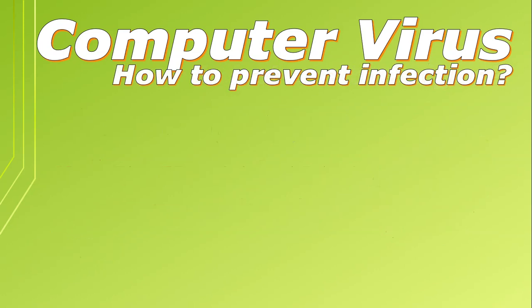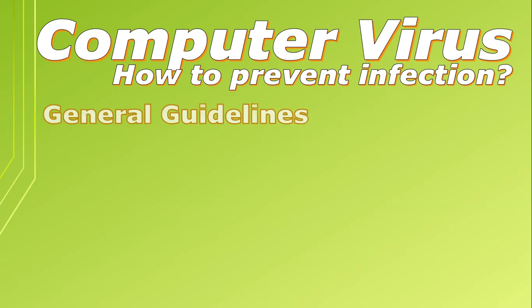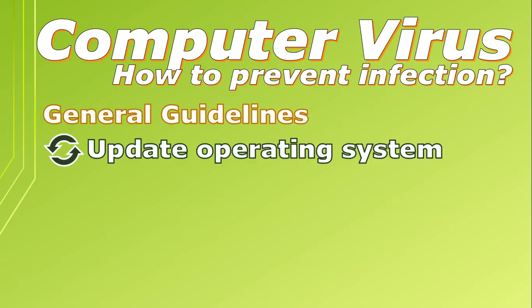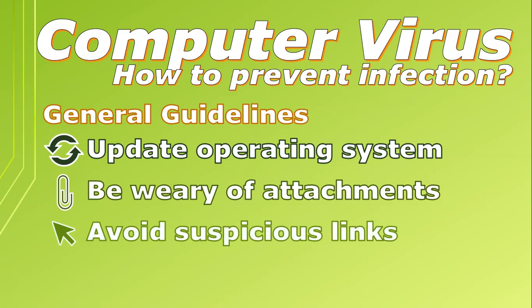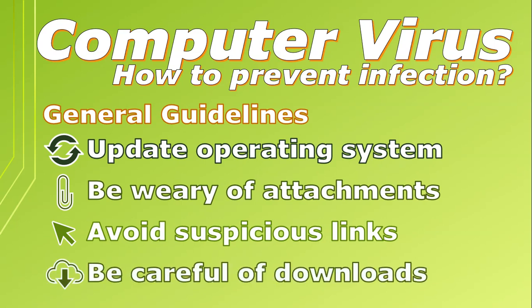What can you do to prevent your PC from getting infected by a computer virus? Ensure that your operating system and other software applications are updated regularly with the latest security patches to prevent exploitation of known vulnerabilities. Be wary of email attachments from unknown senders and never open attachments you're not expecting, even if they appear to be from a trusted source. Avoid clicking on suspicious links, pop-up messages, or ads, especially those offering deals that are too good to be true. Be careful when downloading software and only download from reputable sources, avoiding torrent websites known for hosting malware-infected files.